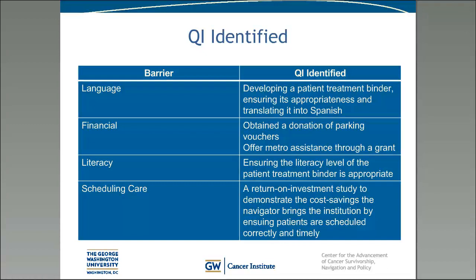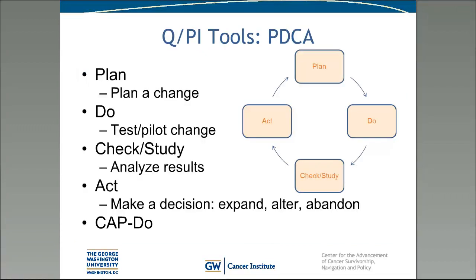Now I'm going to turn it back over to Ann who will explain one more helpful quality improvement tool. These next two frameworks are for helping you actually implement improvements. The first is the PDCA cycle — which you might also hear as PDSA — standing for Plan, Do, Check (or Study), and Act. You plan a change, implement a pilot starting small so you don't throw all resources at a solution that may not work, then look at the results and figure out whether to expand, change, or abandon the project. Sometimes if you have a program already running you can start by looking at the results — in that case it's the same cycle but called CAP-Do.